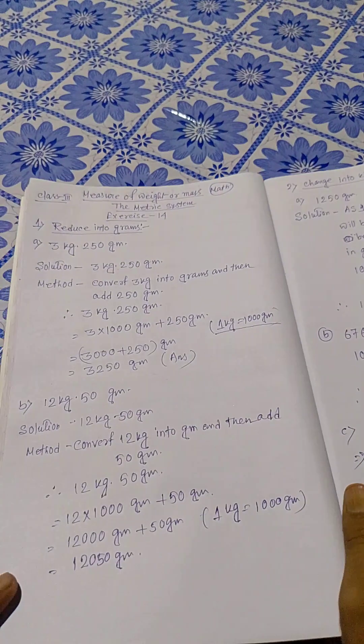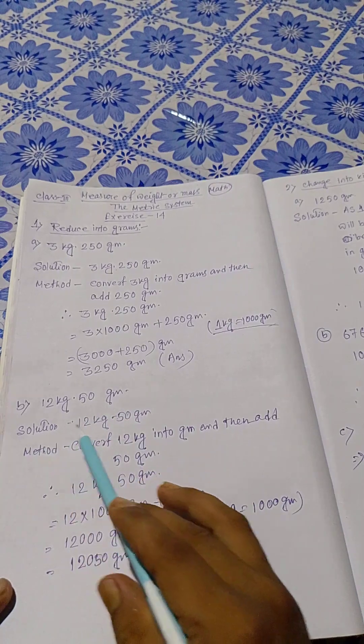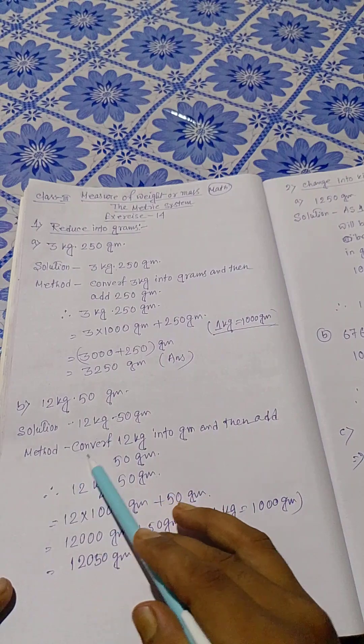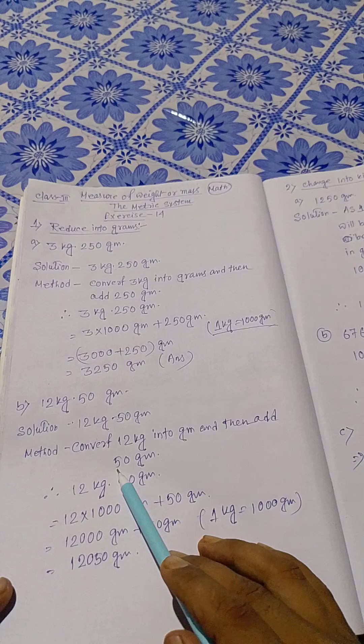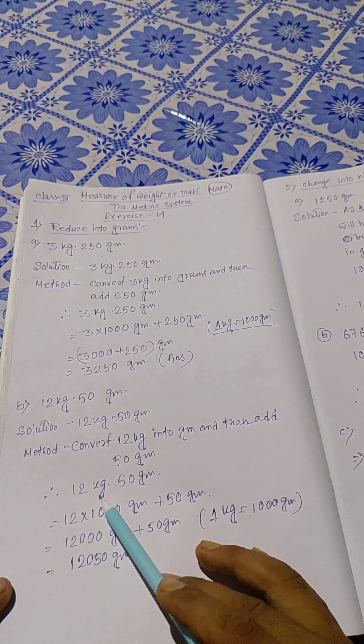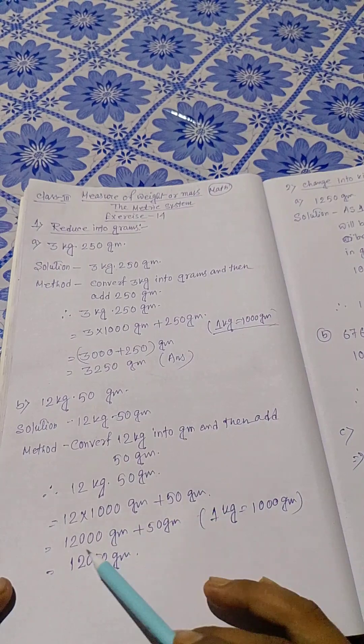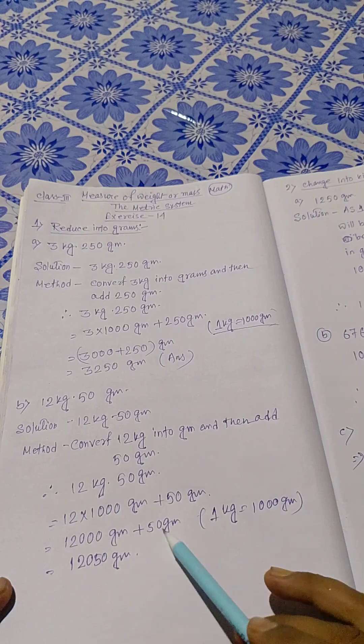Next, 12 kg 50 grams. Solution: 12 kg 50 grams. Method: convert 12 kg into grams and then add 50 grams. 12 times 1000 grams plus 50 grams equals 12,000 grams plus 50 grams. We know 1 kg equals 1000 grams. 12,050 grams.